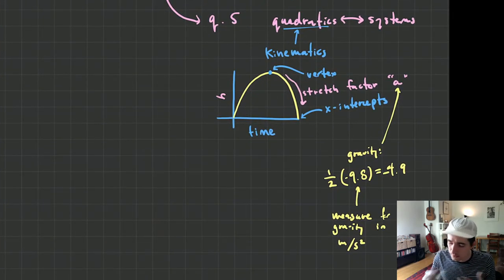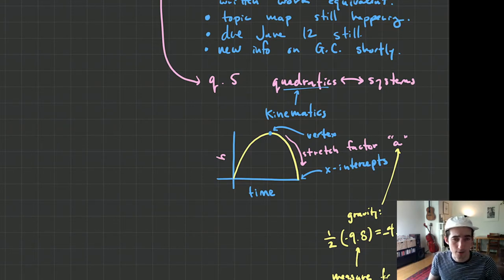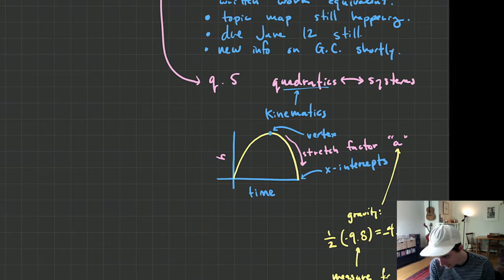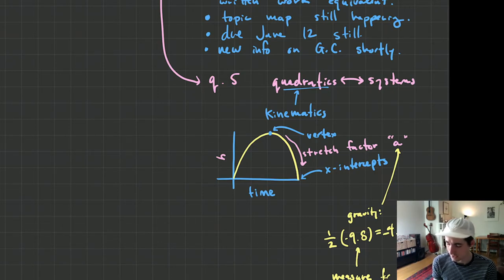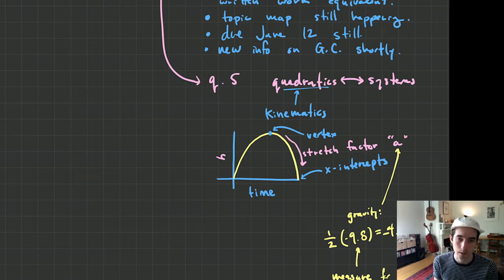This isn't something I want to go super deep into in terms of instruction, because this is not a physics class — it is a math class, but it does deal with some physics concepts like kinematics. The stretch factor for a quadratic equation that describes the motion of how high something is off the ground with respect to time has a stretch factor of negative 4.9. If you use Desmos and use this fact, it's actually not super challenging.